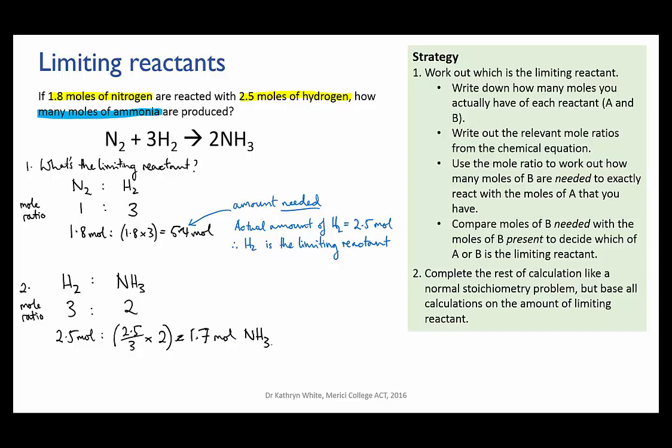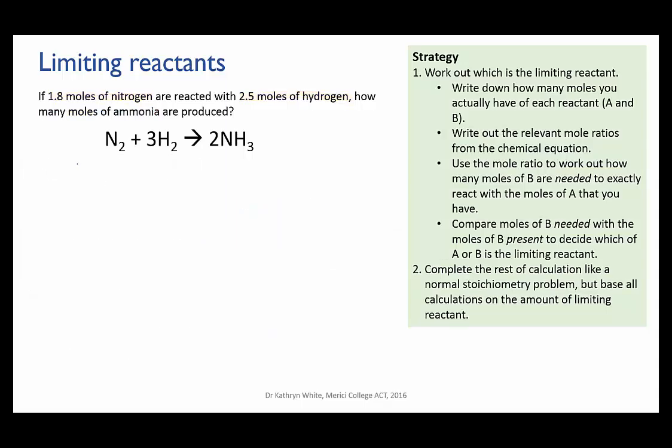Now I just want to show you that it doesn't matter which reactant you choose when you're working out which one is the limiting reactant. Just now I started with nitrogen so let me now do it the other way around and start with hydrogen. I'll write out the mole ratio again and we know that we have 2.5 moles of hydrogen present so I'll put that in as the amount that's present.